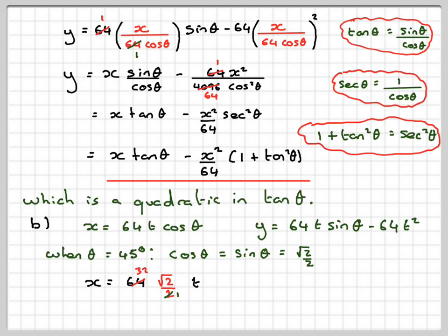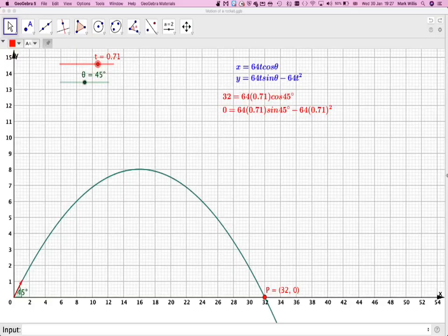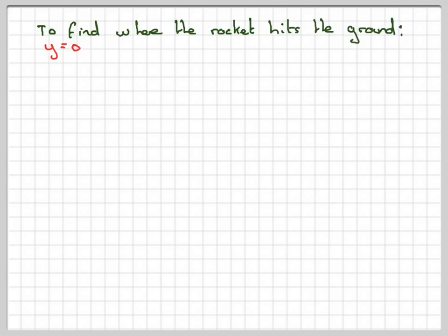So we're going to have x is 64 √2 over 2 times t. So that's going to give me 32. And so my x part of the equation will become 32√2 t. And then the y part will become 64 √2 over 2 minus 64t². This will cancel with this to give 32, so I'm going to get 32√2 t - 64t². Now, to find where the rocket hits the ground, the height is equal to 0.